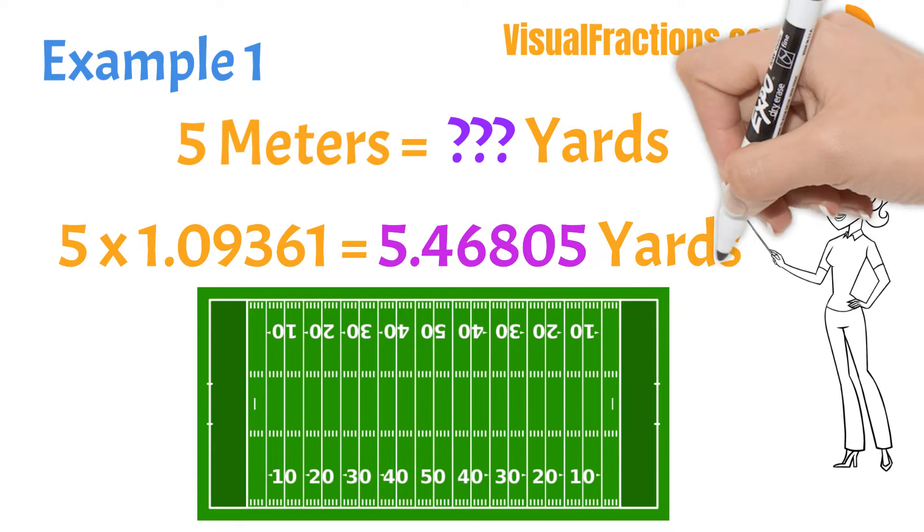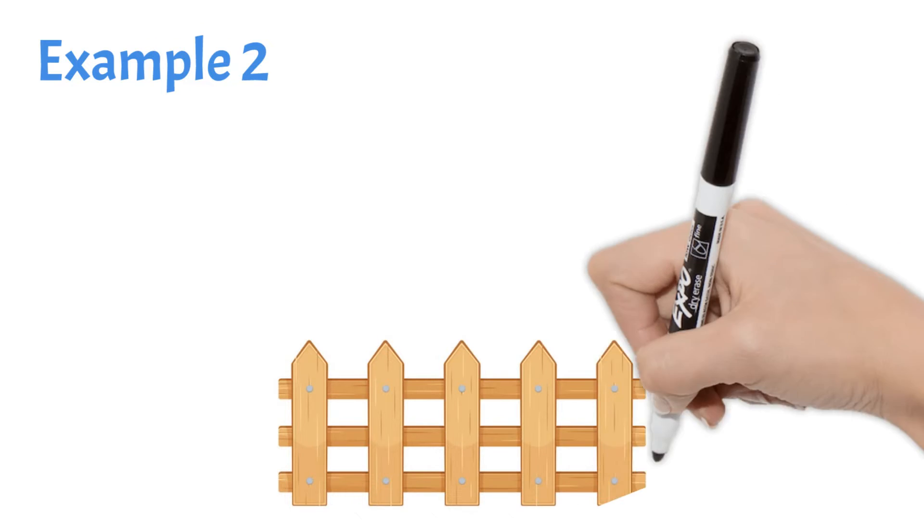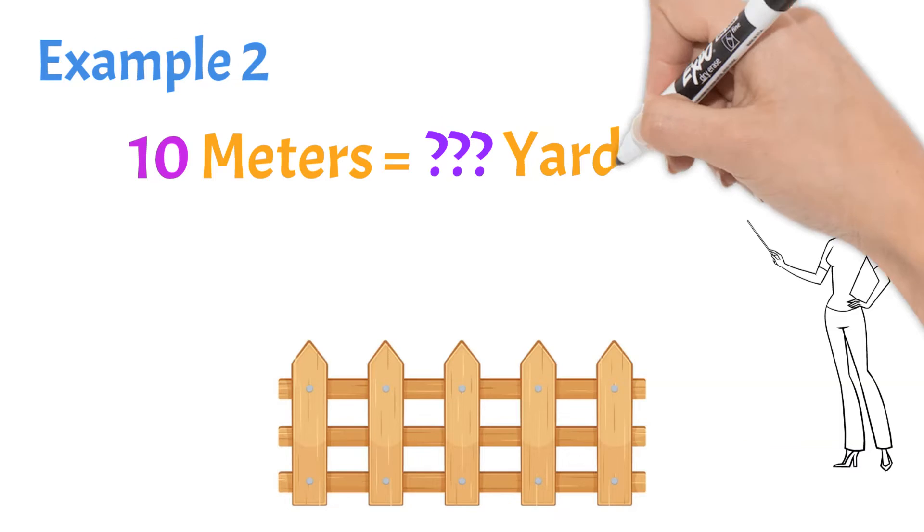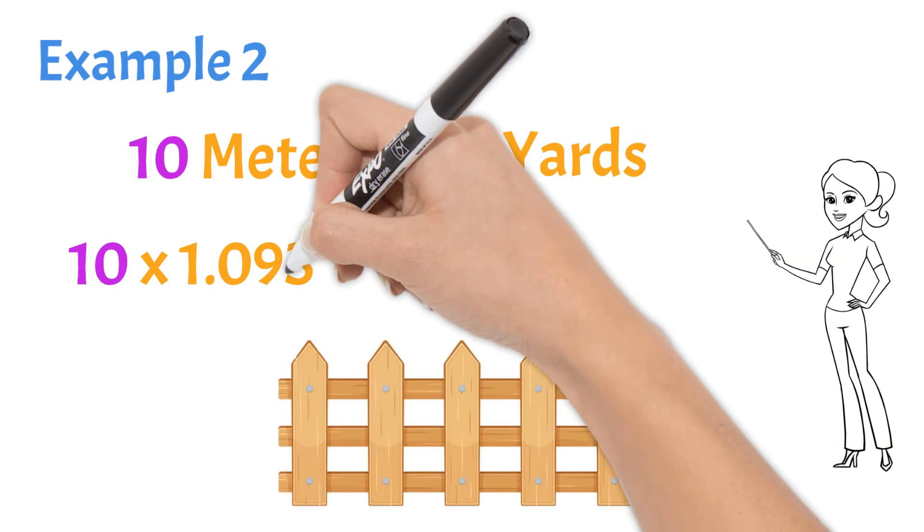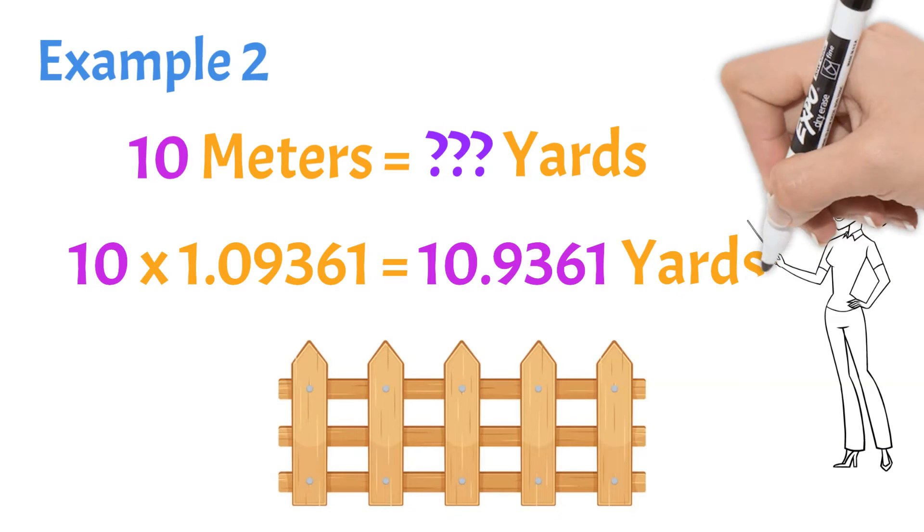What if you have a different amount? Imagine you're measuring for a new fence and you come up with a total length of 10 meters. To convert that measurement to yards, you multiply 10 meters by 1.09361, which equals 10.9361 yards.